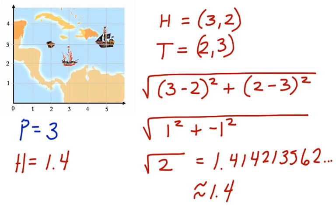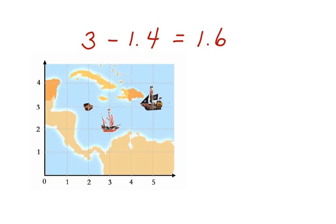Now we want to tell how much closer one ship is versus the other. In order to do that, we're going to need to subtract these two values. 3 minus 1.4 is equal to 1.6. So we can say that the hero ship is approximately 1.6 units closer compared to the pirate ship.